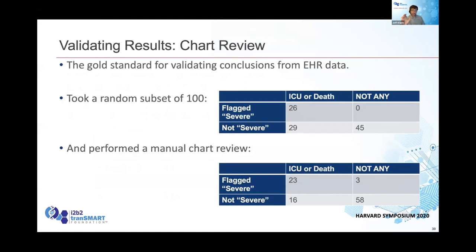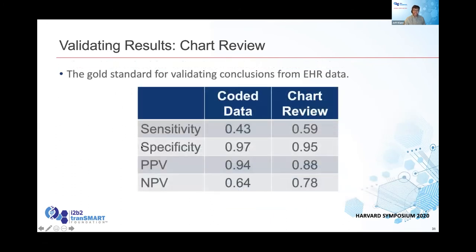The next step was to actually look at the chart, which allows you to see what actually happened to the patient — not just what's in the coded data. That requires a human to read and code the chart. We took a random subset of 100 patients and looked at those flagged severe or not severe, with ICU or death or neither, then compared to chart review — top is coded data, bottom is chart review. It actually looks pretty similar. The main difference was our data was flagging people as being in the ICU who according to chart review were not. That actually improved the sensitivity at our site a little with the chart review data.